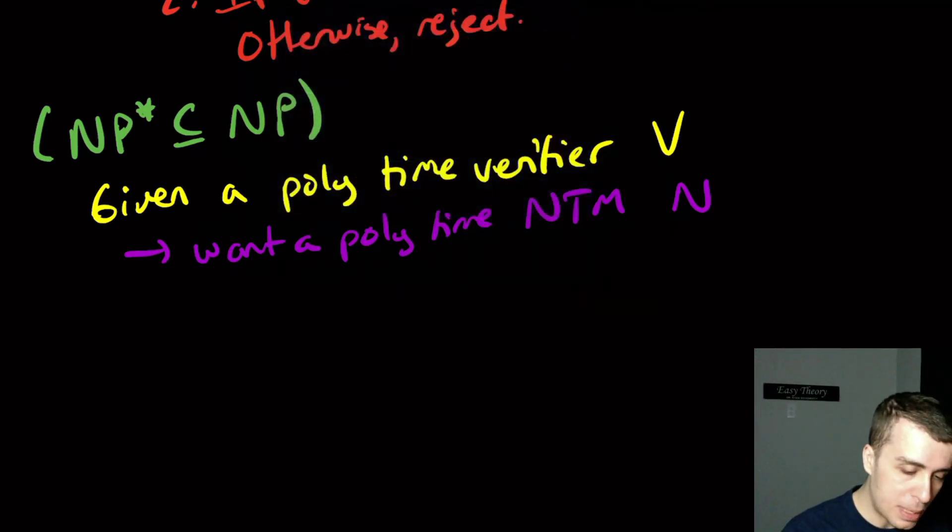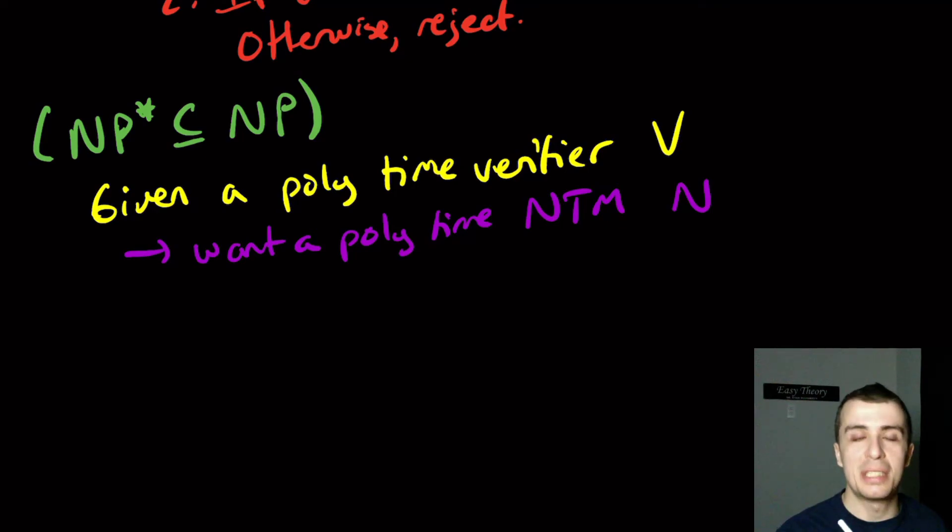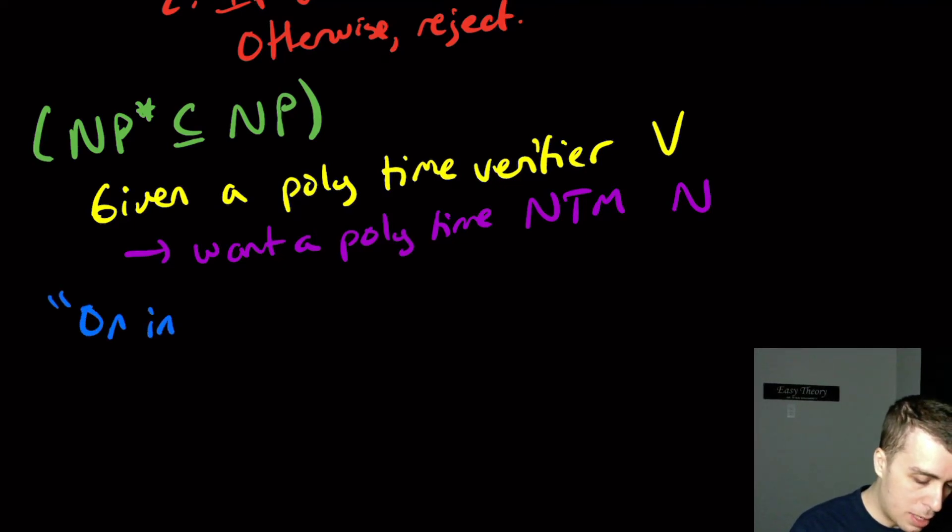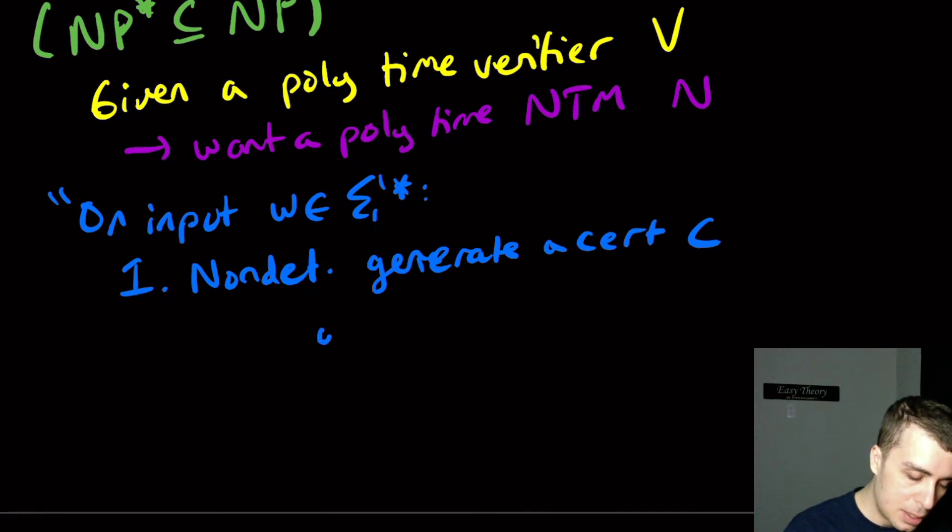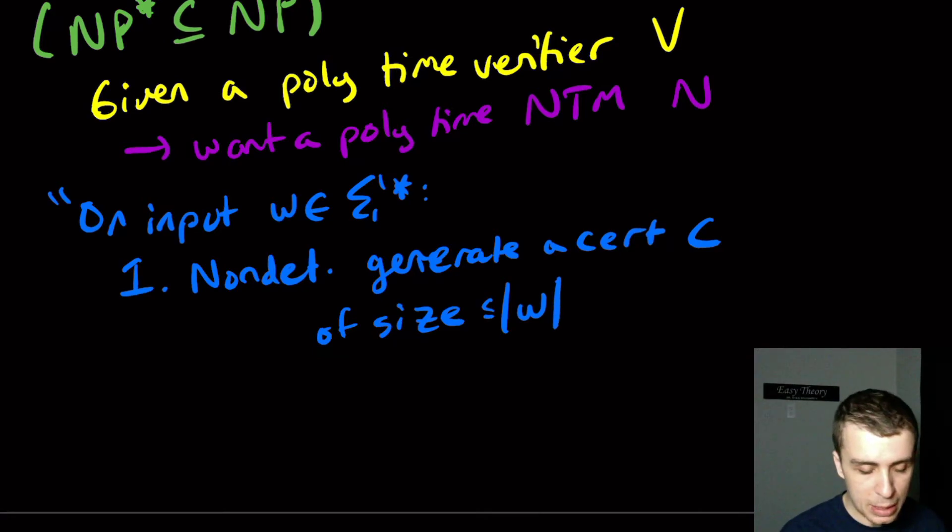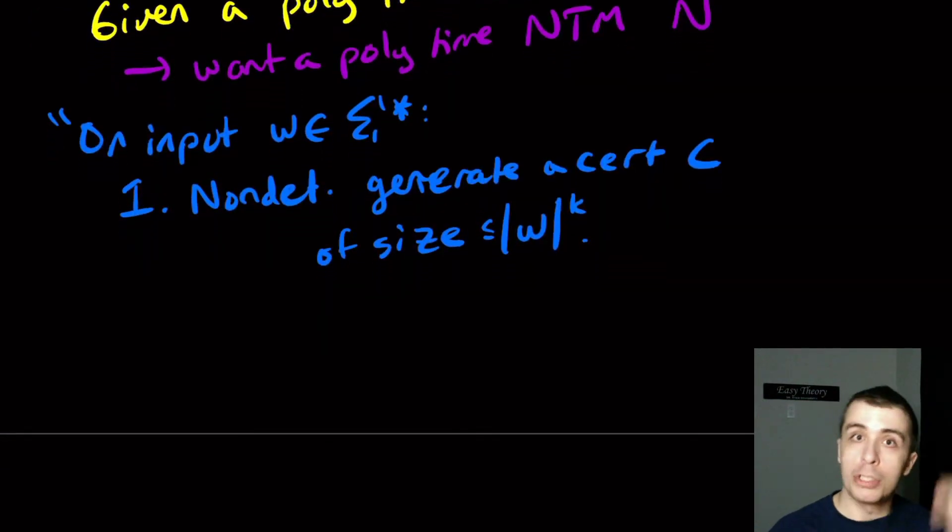We got to be a little bit careful because we got to make sure that the certificate size is at most a polynomial in the input size, but we can certainly do that. So on input W in Sigma star, although it doesn't really matter. Then what we will do is non-deterministically generate a certificate C of size at most the length of W to the power K for some integer K. And we'll use the non-determinism to also stop us at a certain point. So it will be a polynomial.